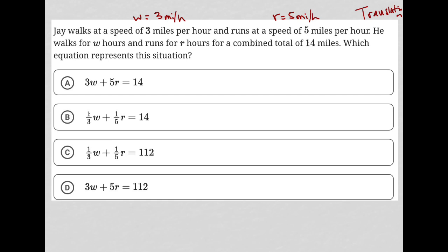He walks for W hours — but I can't use W for both speed and hours, so W is the number of hours that he walks. I'll say W hours, where H stands for hours, and runs for R hours. This gives a combined total of 14 miles. Which equation represents this situation?